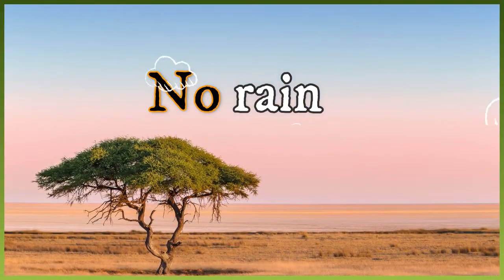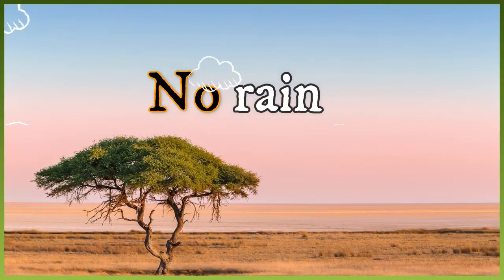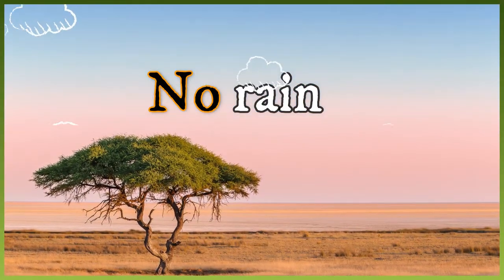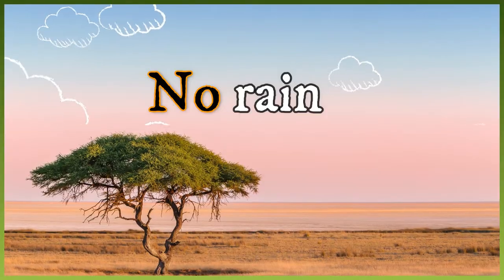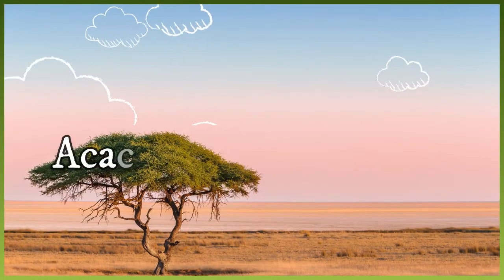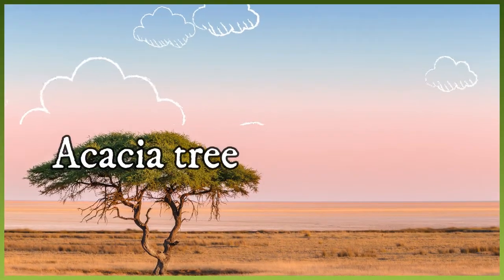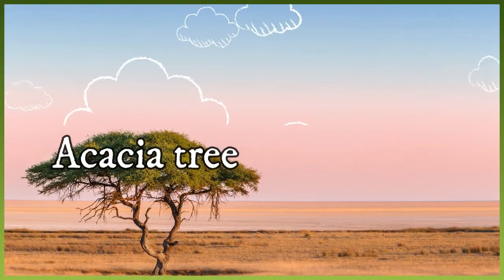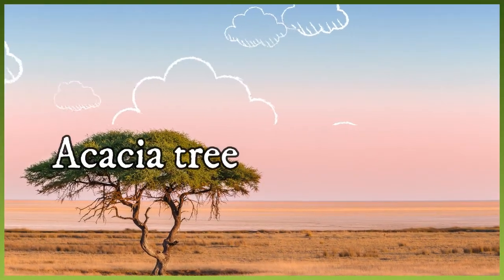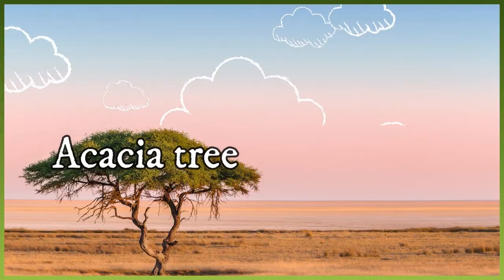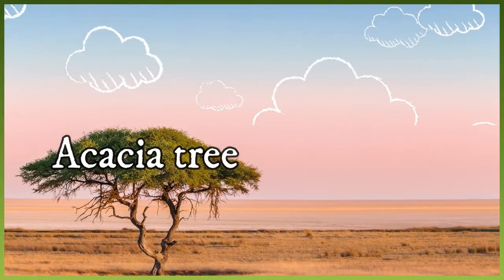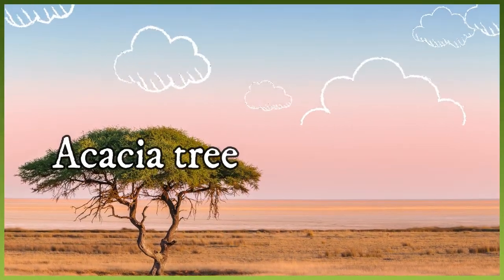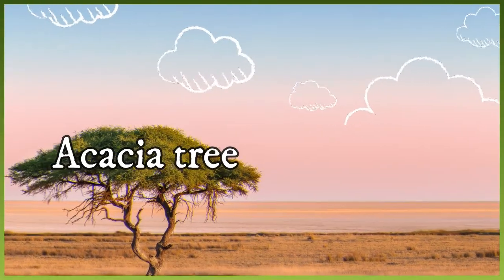When you look over the Savannah, you can see one large umbrella-shaped tree scattered throughout the landscape, which is the acacia tree. Acacia tree grows in Savannah Forest in Southern Africa because of its structural and behavioral adaptation.